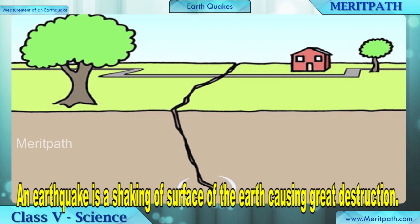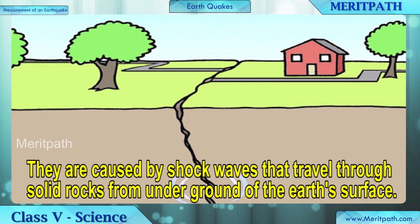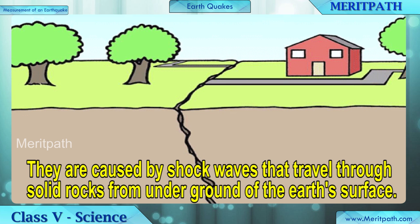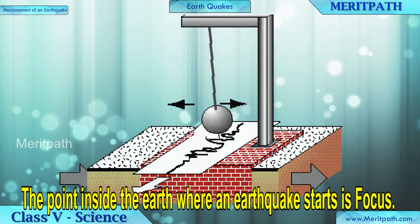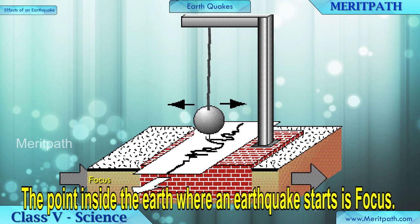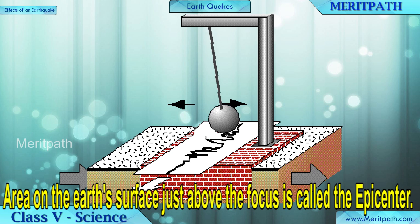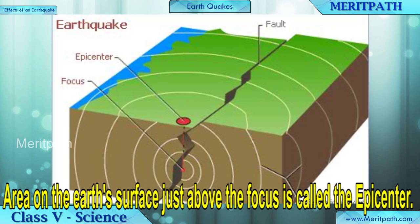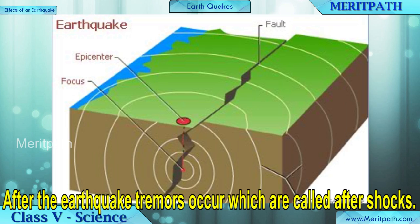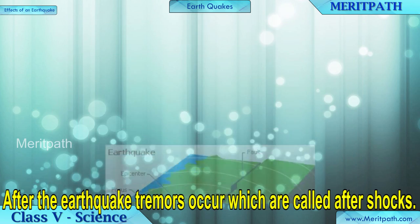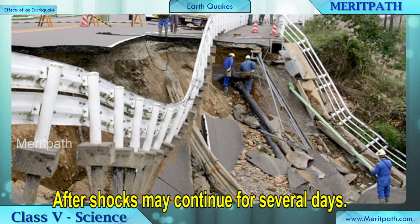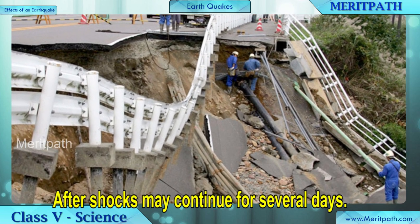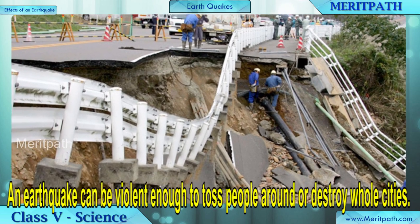Earthquakes are caused by shock waves that travel through solid rocks from under the ground. The point inside the Earth where an earthquake starts is known as the focus. After the earthquake, tremors occur which are called aftershocks. These aftershocks may continue for several days.